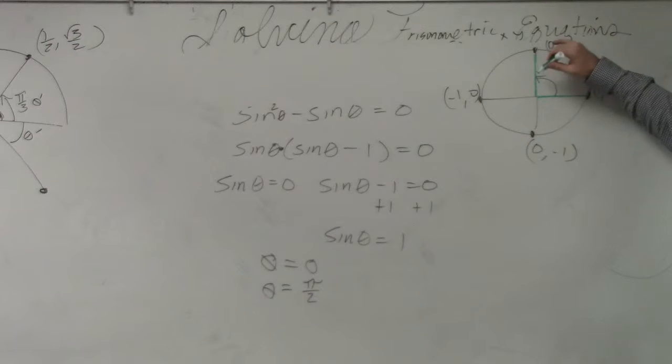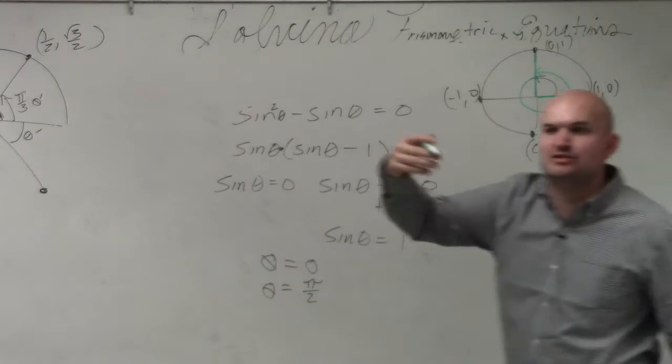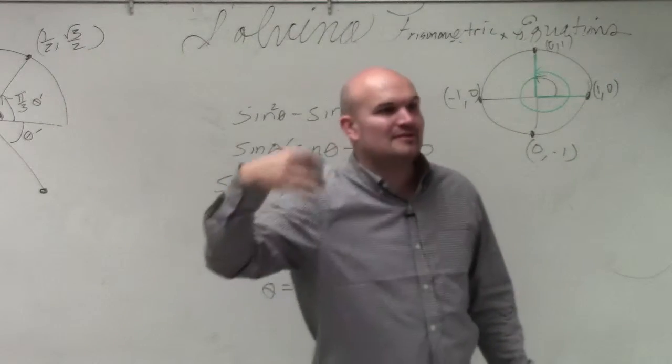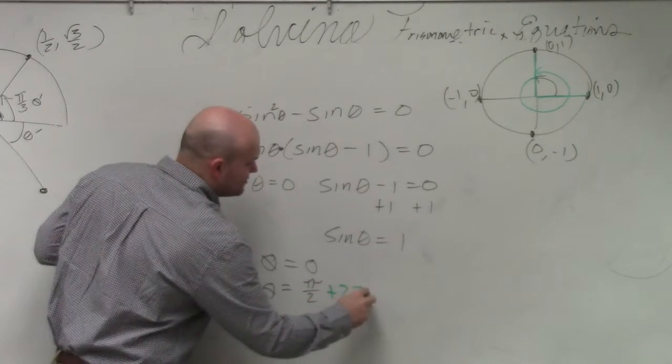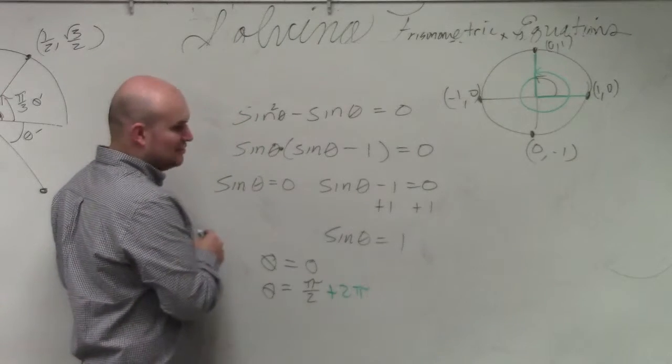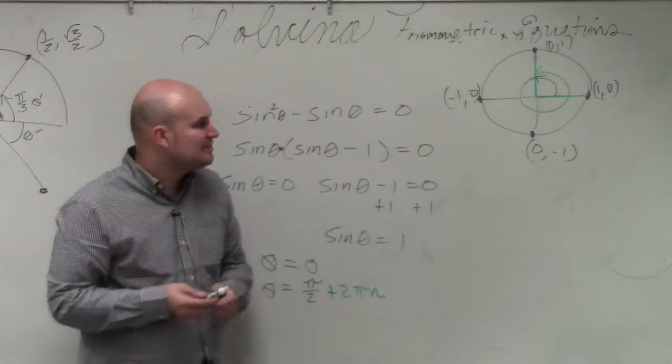If I want to find another solution, all I need to do is find another coterminal angle, right? So I need to basically do what? I need to add, how far do I go around? 2π. And then how many times can I keep on adding 2π to keep on getting a solution? Infinite. N, right? Which we just use the variable n, which would be infinite.